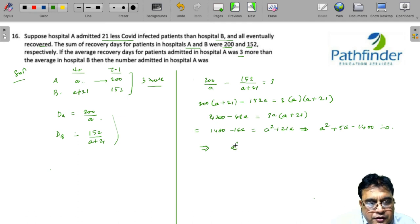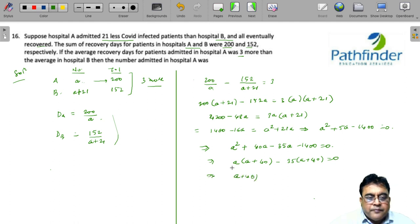Now if you want to solve this equation, you can write it as A square plus 40 times A minus 35A minus 1400 is equal to 0. A into A plus 40 minus 35 into A plus 40 is equal to 0, or the value of A is equal to 35.